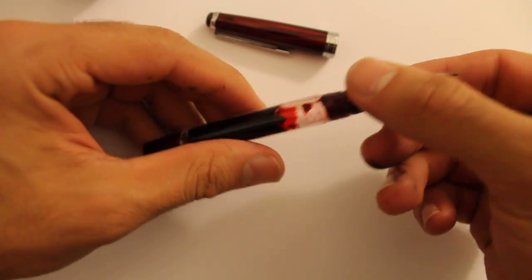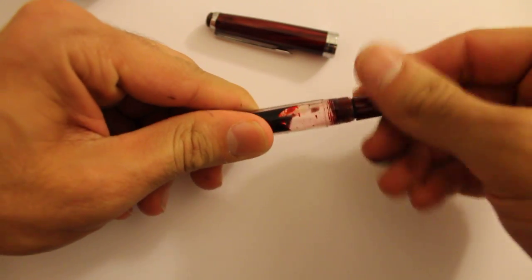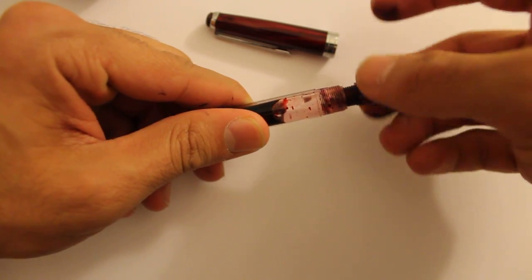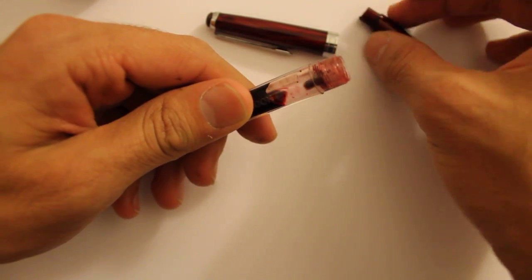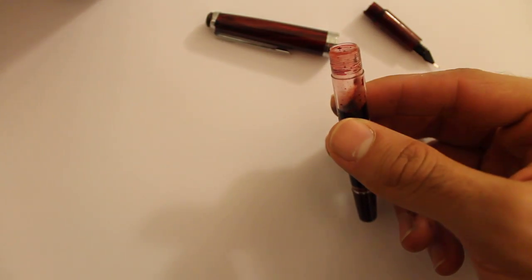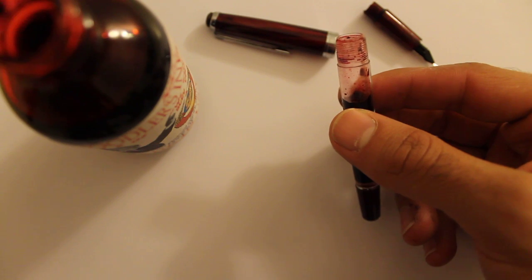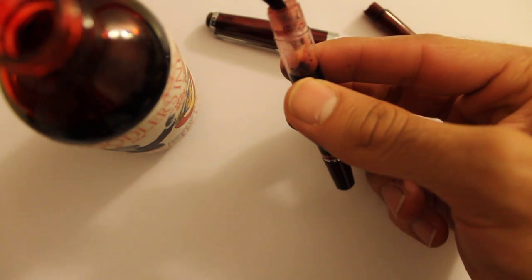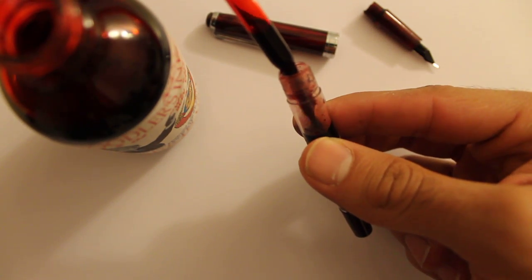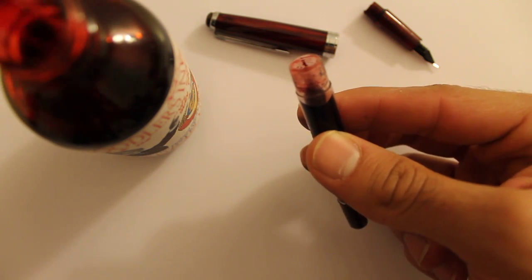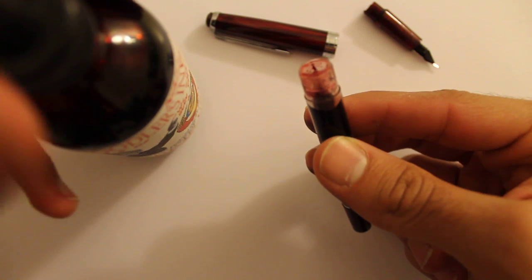And how you go about refilling this I'll show you now. You just go ahead and unscrew this top component that contains the nib and the grip. You put that aside. You take up some ink. Go ahead and squeeze. Just put it here. And just put it in there. Put this back in the bottle. Easy.